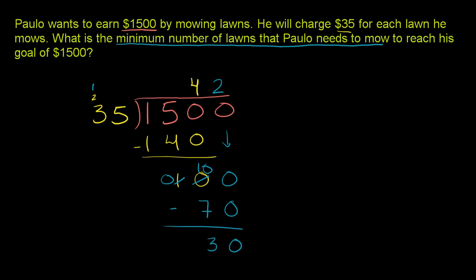So we now know that 35 goes into 1,500 42 times, but there's a remainder of 30. If he mowed 42 lawns, he'd be 30 short of 1,500. 35 times 42 is 30 less than 1,500 — it's 1,470. So in order to make $1,500, he's going to have to go over it. He's going to have to do one more lawn than 42.